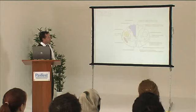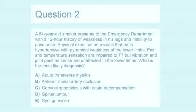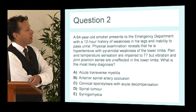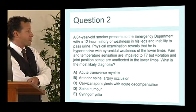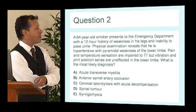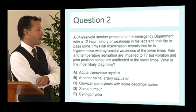Question two. A 64-year-old smoker presents to the emergency department with a 12-hour history of weakness in the legs and inability to pass urine. Physical examination reveals hypertension, pyramidal weakness in the lower limbs, pain and temperature sensation impaired to T7, but vibration and joint position unaffected in the lower limbs. What's the most likely diagnosis? Here are the five options. I'll give you a minute to think about that.